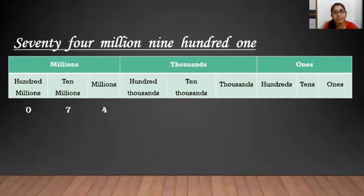But, how many zeros? Yes! We have to have 3 digits. So, 3 zeros. And then, 901 under the ones period.